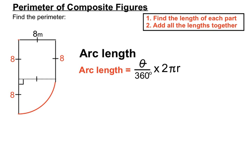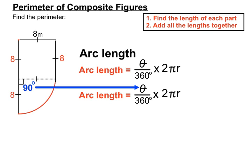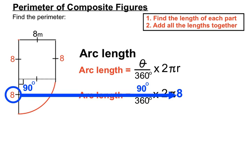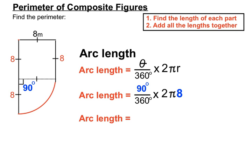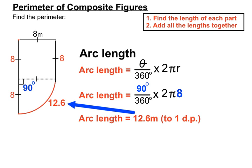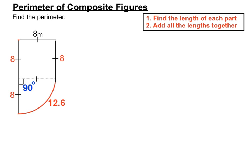There's our arc length formula from the previous example. The angle theta here is 90 degrees — we have a right angle symbol, so we know there are 90 degrees at the centre of our arc. That 90 degrees goes in where theta is. The radius of the arc is 8m, and we pop that in where r is. On the calculator, that gives us an arc length of 12.6m around the red curved part of the composite figure.